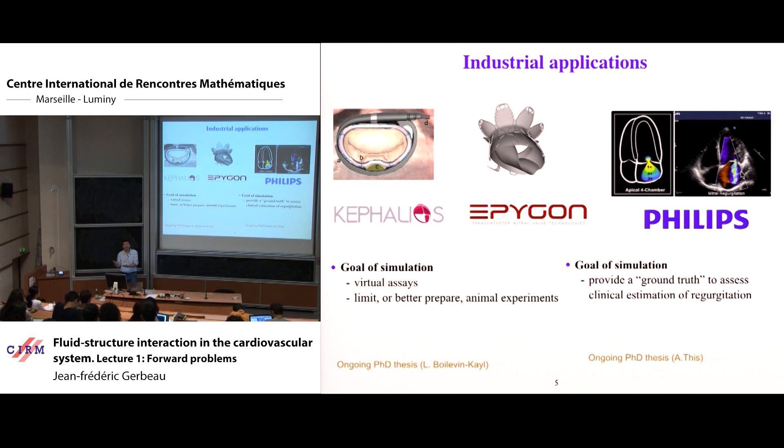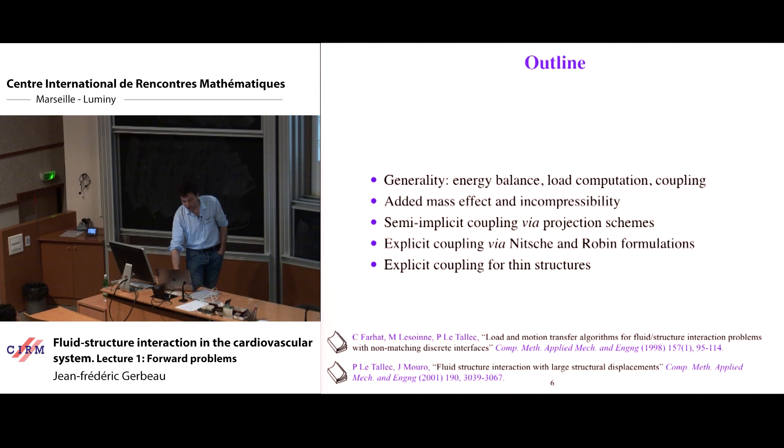The echocardiography-based techniques rely on several assumptions, and numerical simulation can provide a ground truth to test those assumptions. If you do it on a patient, you do not have the ground truth. But if you have a numerical simulation with all the velocity field, pressure, and so on, you have the ground truth. You can apply what is done on the patient and compare to the ground truth to see if the assumptions are correct or need to be modified.